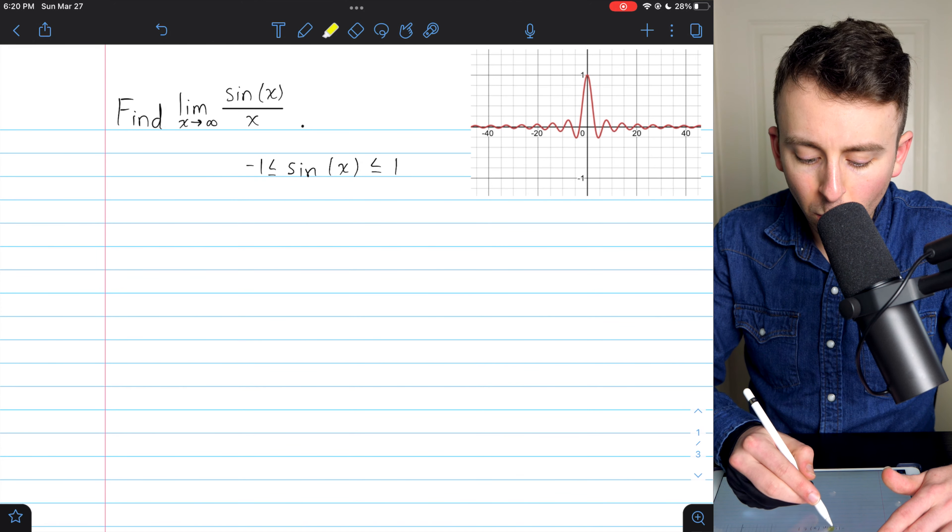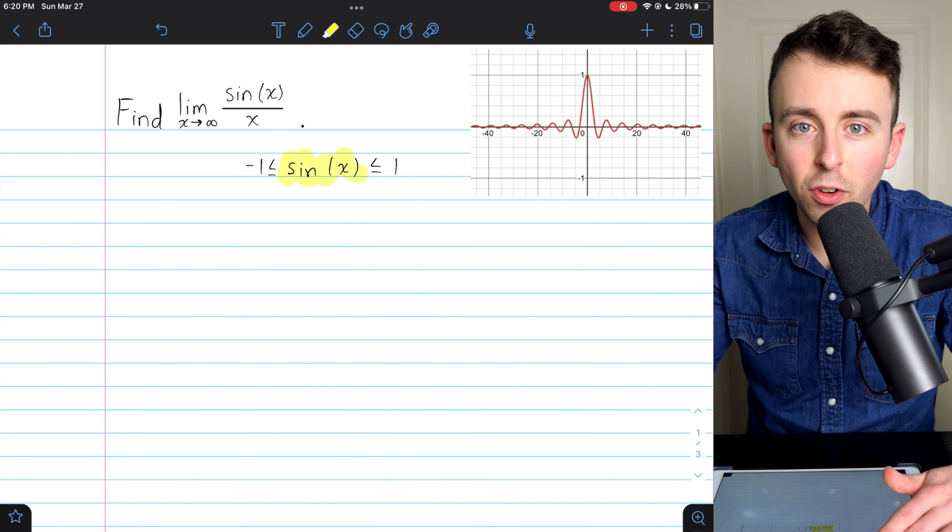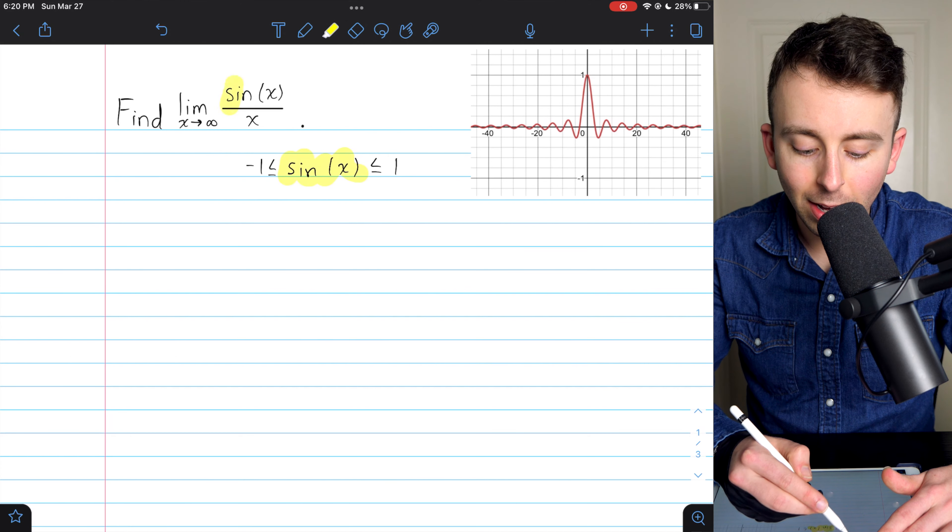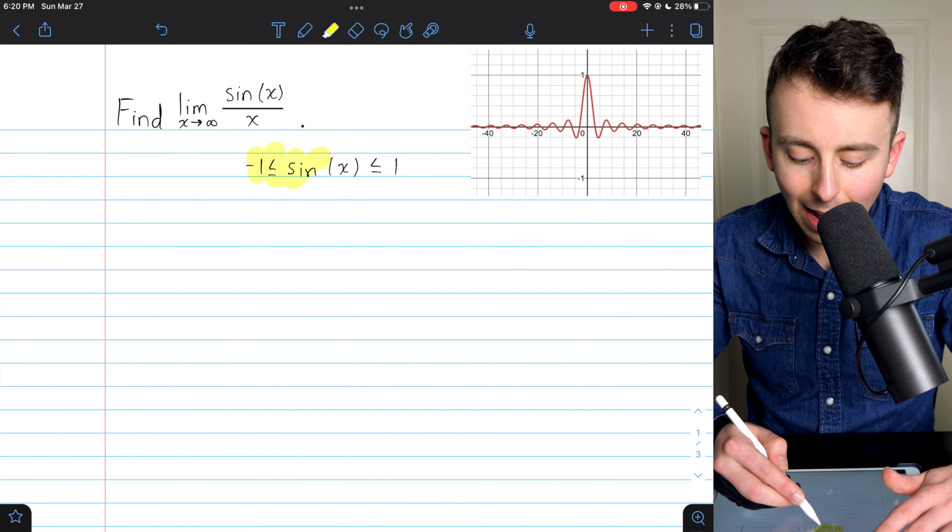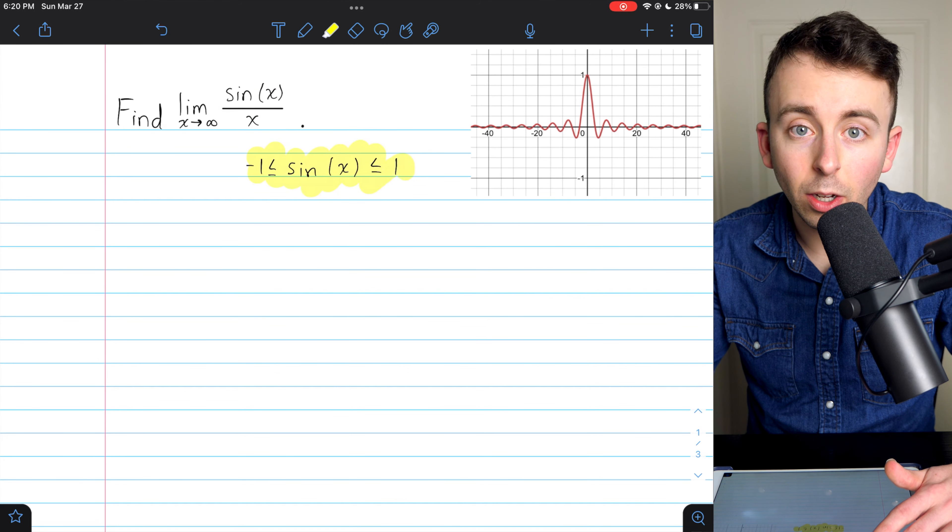Of course, here we've got sine involved, but sine is not actually the function we're interested in. We're interested in the function sine of x over x. So how do we get sine of x over x involved in our inequality?